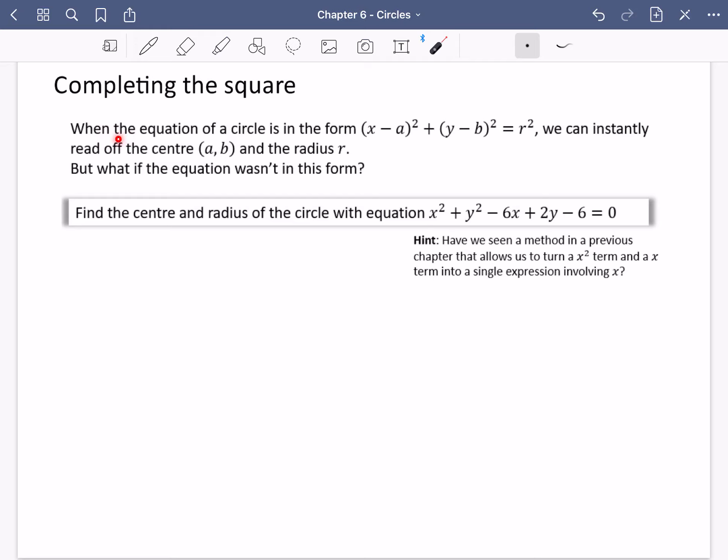Okay, so as we've been looking at so far, the equation of a circle, if the equation of the circle is in this form that we have here, then it's so easy to instantly read off that the center is just AB and the radius is R. But what if the equation wasn't in this form?